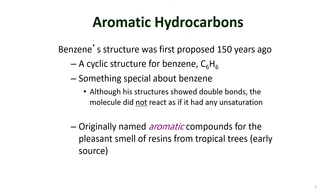Some general information about aromatic hydrocarbons: one of the earliest discovered was the benzene molecule, which has six carbons and six hydrogens. Its structure was proposed about 150 years ago. It is a cyclic molecule with six carbons and six hydrogens, and there is something special about this benzene molecule.